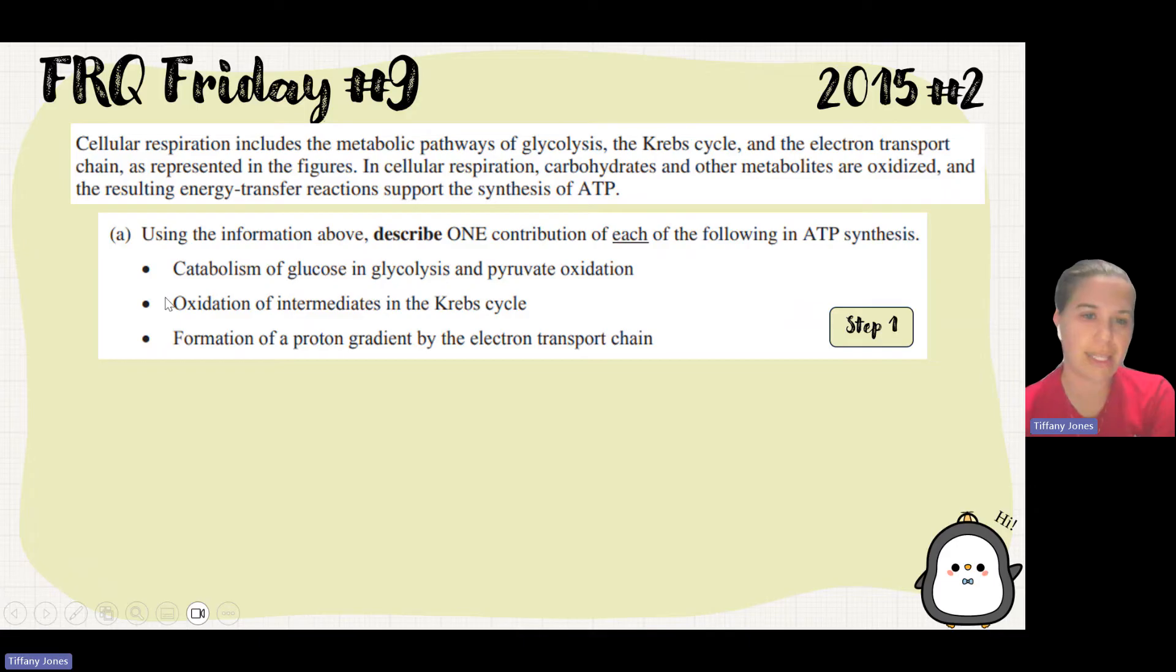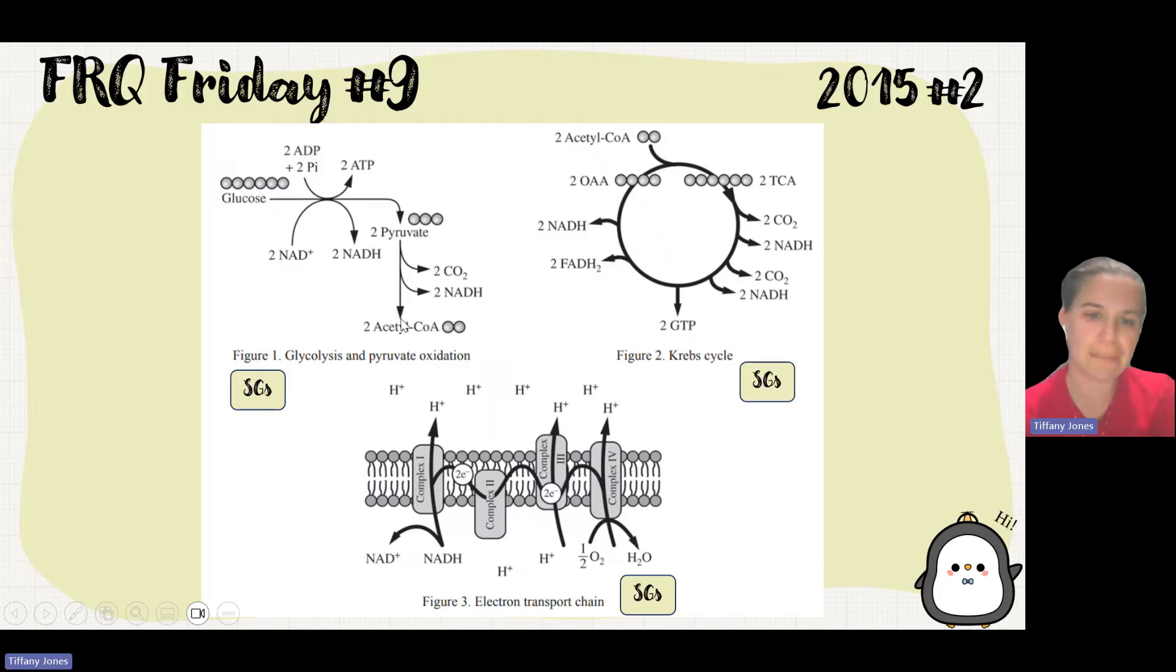Let's first look at the catabolism of glucose in glycolysis and pyruvate oxidation. If we look at it, we start with glucose and end up with pyruvate. How does this allow me to make ATP? I can see right here that there's two ATP molecules that are produced by substrate level phosphorylation. So that's one way where I can make ATP.